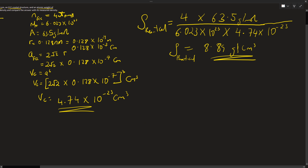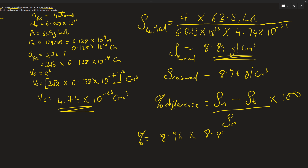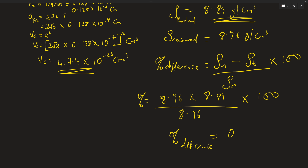For the comparison, the measured density of copper is 8.96 grams per centimeter cubed. To get the percentage difference, we calculate: (measured density minus theoretical density) over measured density, times 100 — which gives (8.96 minus 8.89) over 8.96 times 100. Solving this, the theoretical density of copper is approximately 0.78% less than its measured density. This small difference indicates that the theoretical calculation closely matches the actual measured value.